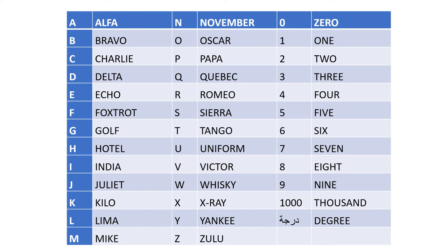N - November, O - Oscar, P - Papa, Q - Quebec, R - Romeo, S - Sierra, T - Tango, U - Uniform, V - Victor, W - Whiskey, X - X-Ray, Y - Yankee, Z - Zulu.